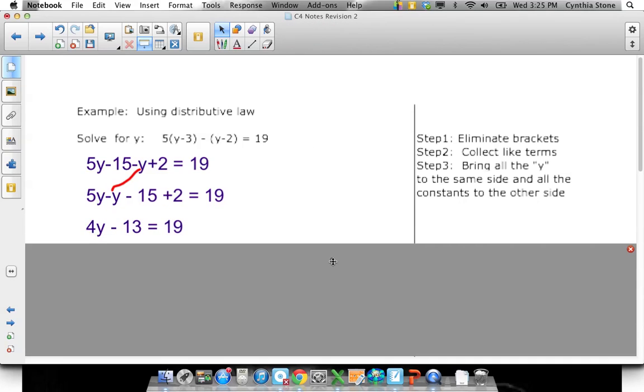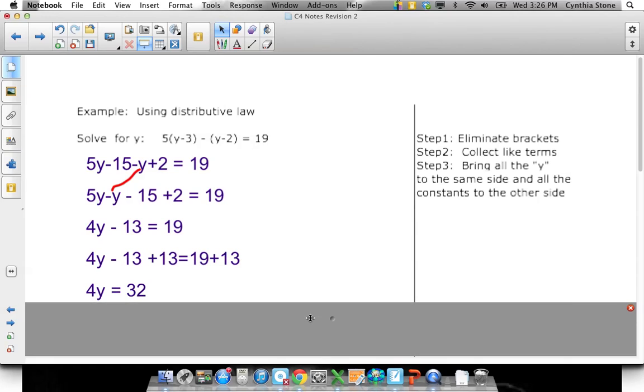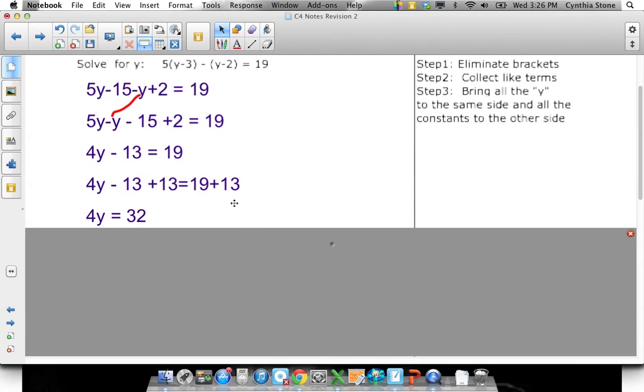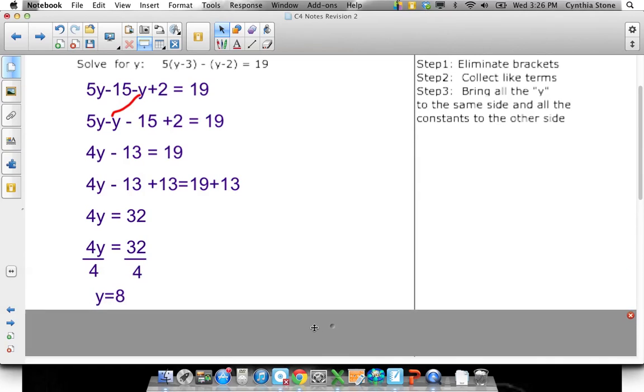That leaves me with the things almost as collected as I can - 4y and minus 15 plus 2 is minus 13, equals 19. Now I got to get the minus 13 over to the other side. I want all the numbers over on the right, so I add 13 to both sides. Then I end up with 4y equals 32, divide both sides by 4, and y equals 8.